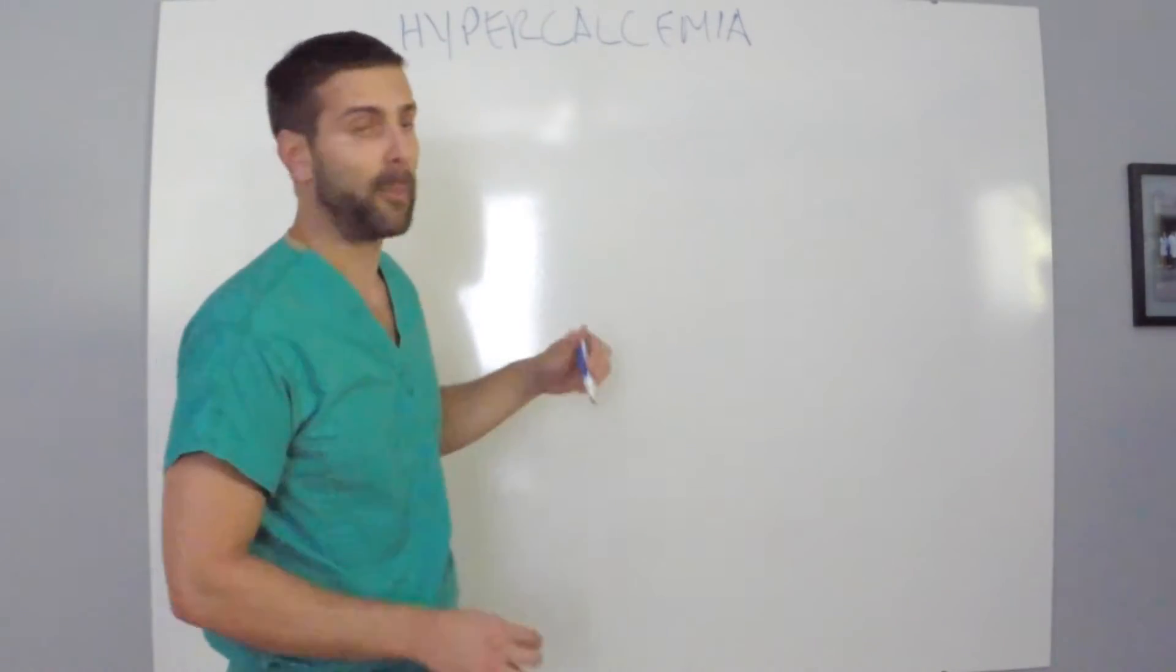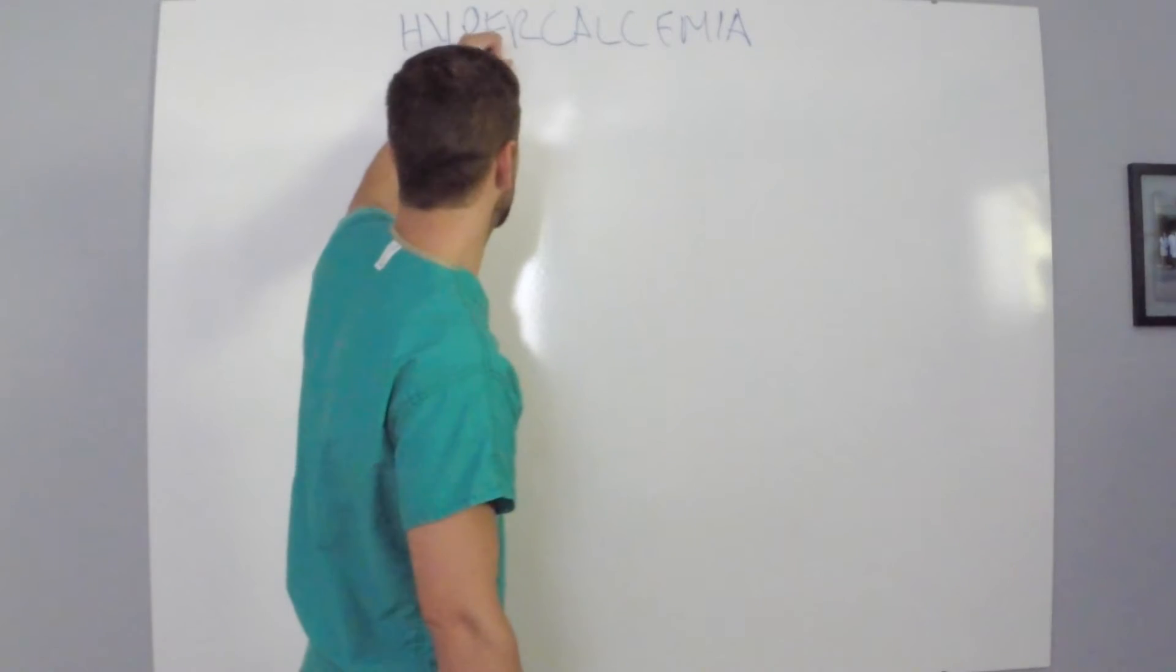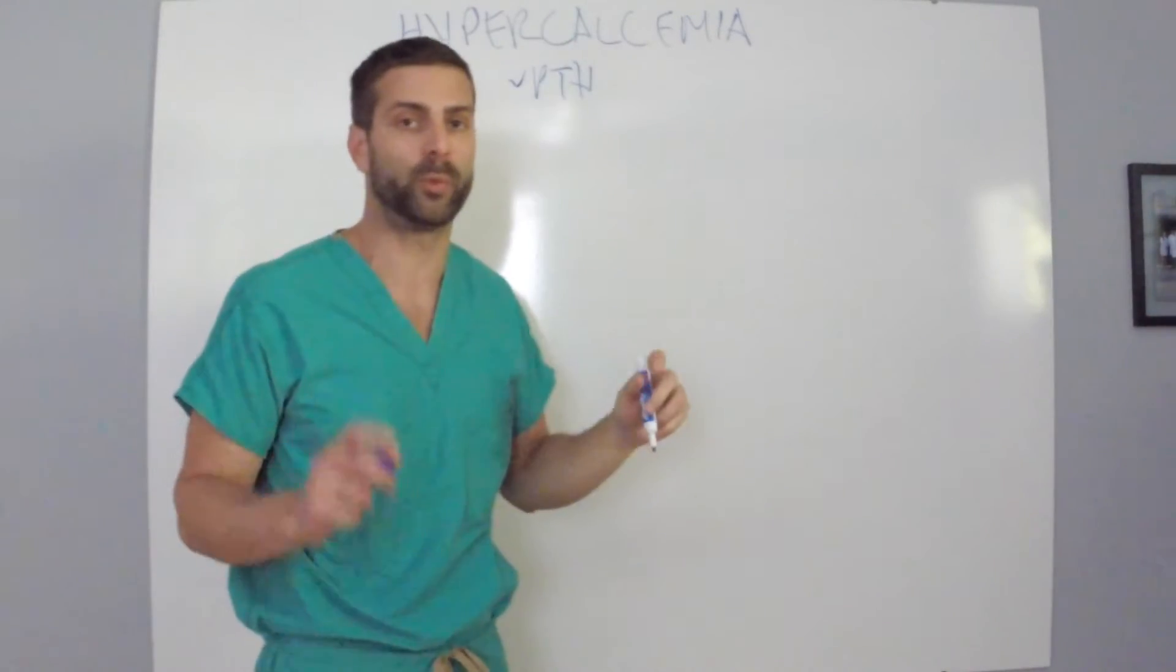The next thing you want to do is fire off a PTH. So you're going to check a PTH and then this is going to take you down one of two rows.